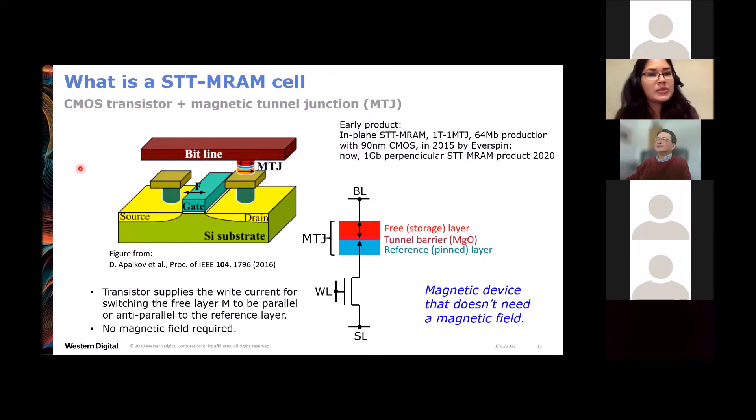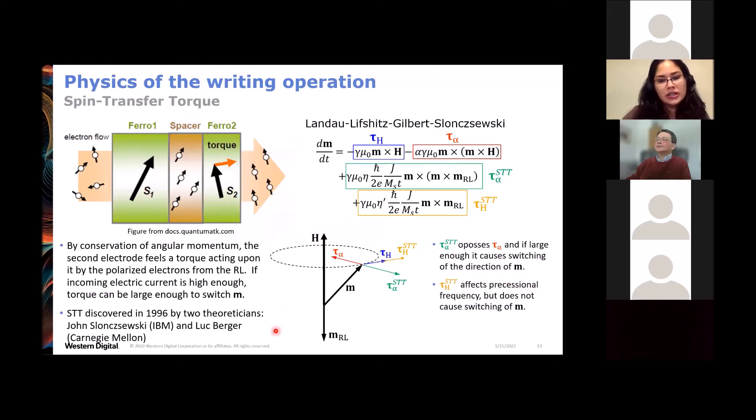So what is a STT MRAM cell? It is one transistor, one MTJ. The transistor supplies the write current to switch the magnetization of the free layer to be parallel or anti-parallel to the reference layer. And there's no magnetic field required here. So it's a magnetic device that does not need a magnetic field. When a current is passed through the tunnel junction by conservation of angular momentum, the free layer feels a torque acting upon it by the polarized electrons from the reference layer. If the incoming electric current is high enough, then the torque is large enough to switch the magnetization. The spin transfer torque is directly opposing the damping torque that wants to bring the magnetization back in line with the effective field. So for this reason, to have the most efficient spin transfer torque, we want to minimize the damping parameter of the free layer material.